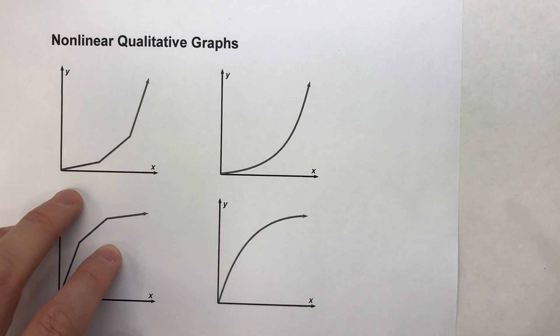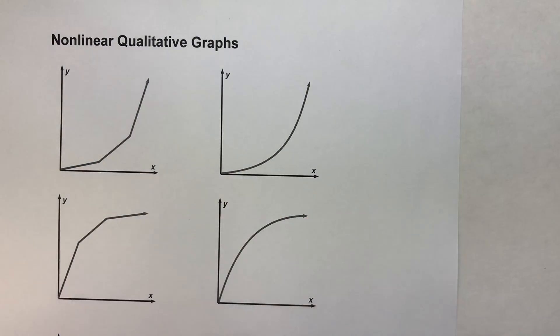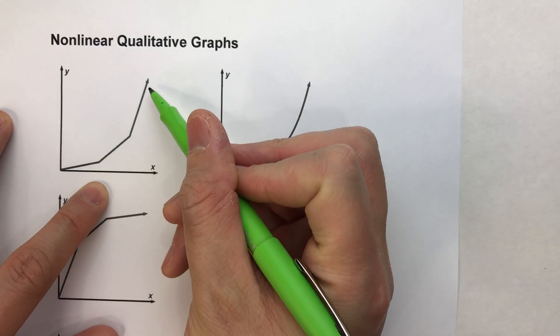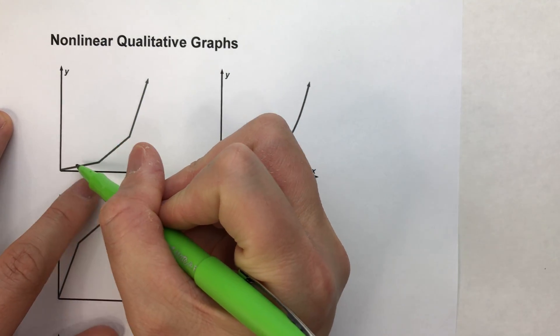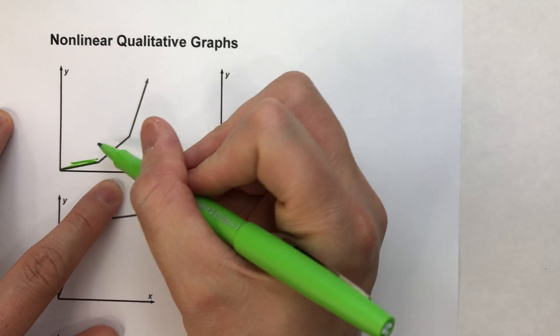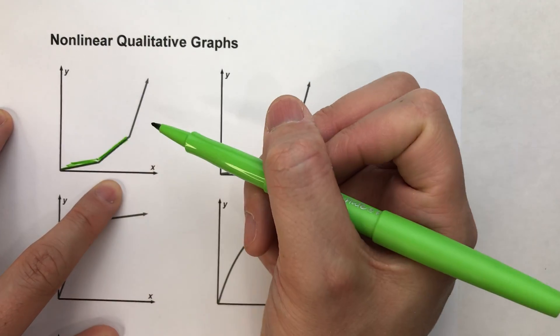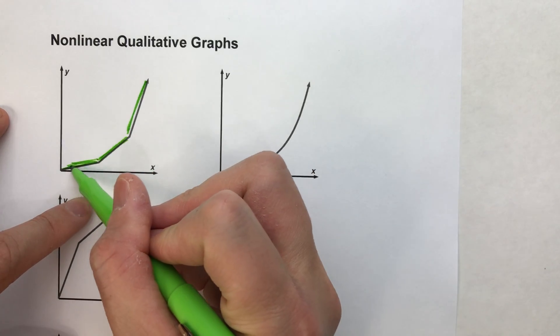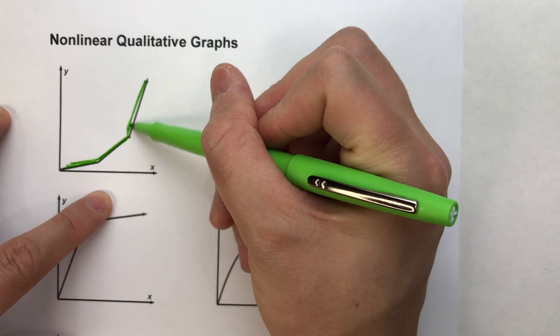So take a look at this example on the left here. Notice this is an increasing set of intervals. We start out increasing here and then we get a little bit faster and then we get even faster still. So we start out slow, faster, fastest.